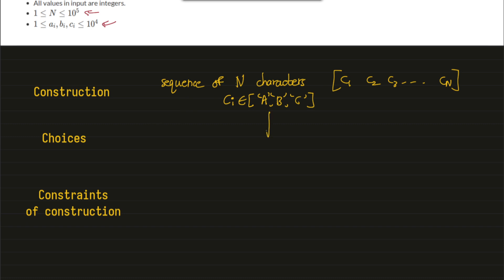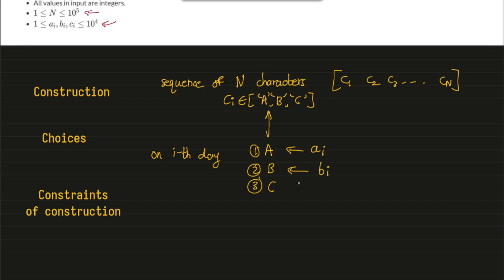On the i-th day we have three choices: either perform the first, second, or third activity. If we perform activity a on the i-th day we get a_i points of happiness, b_i if activity b is performed, and c_i if activity c is performed. These are the possible choices available to us.